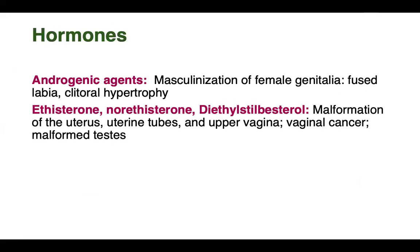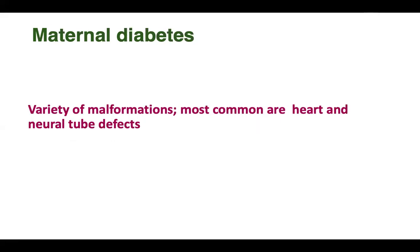Next are hormones. Some hormones such as ethisterone, norethisterone, diethylstilbestrol — taken as contraceptives where pregnancy accidentally occurs, or androgenic agents being used as treatment when pregnancy happens — can cause masculinization of female genitalia, that is fused labia and clitoral hypertrophy. Ethisterone, norethisterone, and diethylstilbestrol can cause malformation of the uterus, uterine tube, and upper vagina, vaginal cancer, and malformed testes.